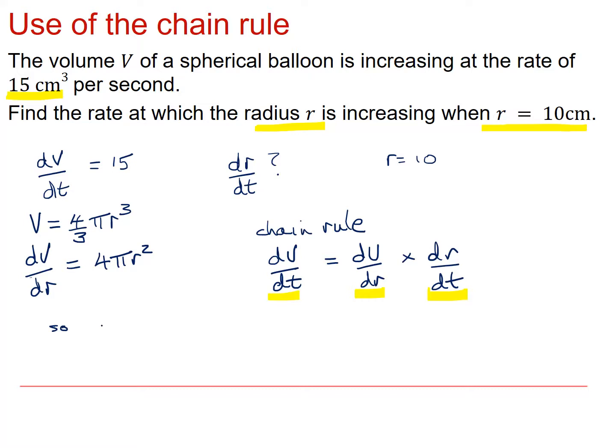So, dr by dt is equal to dV by dt, that's 15, divided by dV by dr. That's 4 pi r squared. And so, when r equals 10, dr by dt is going to be 15 over 400 pi, which is 0.012 cm per second.